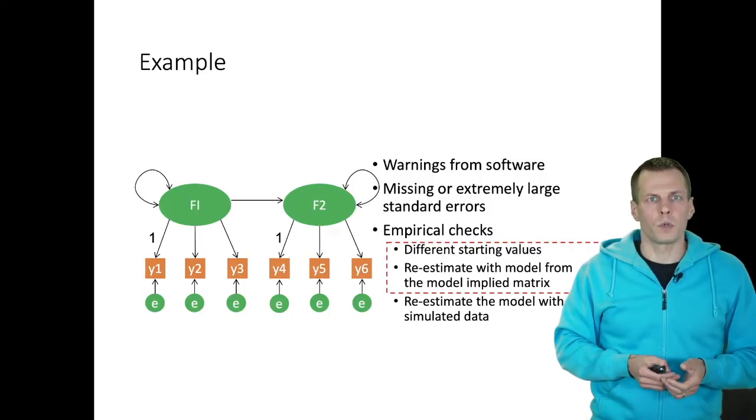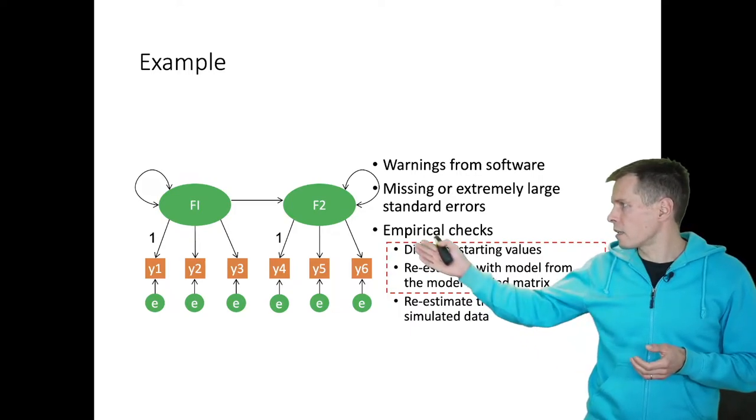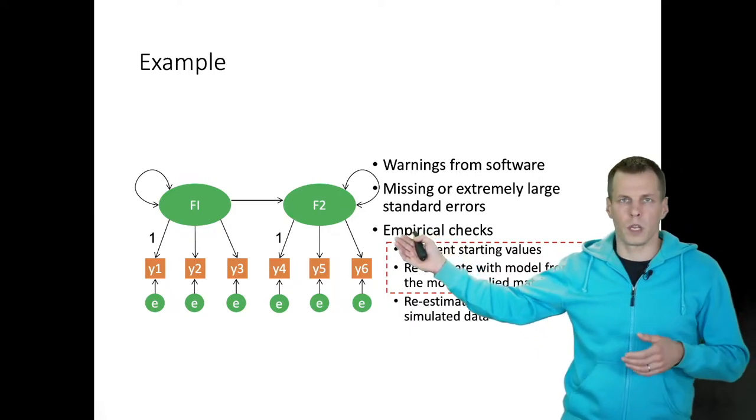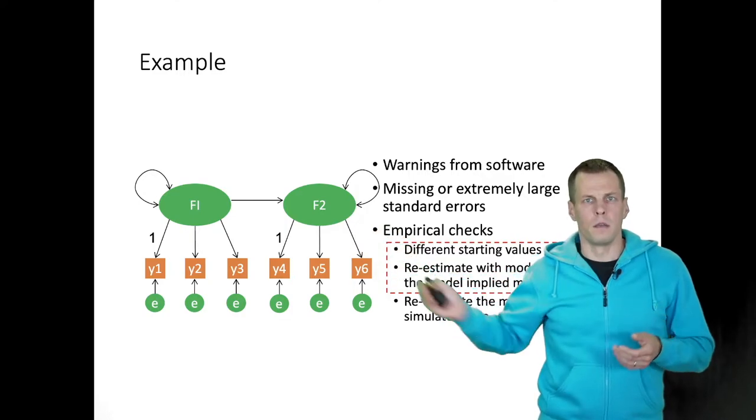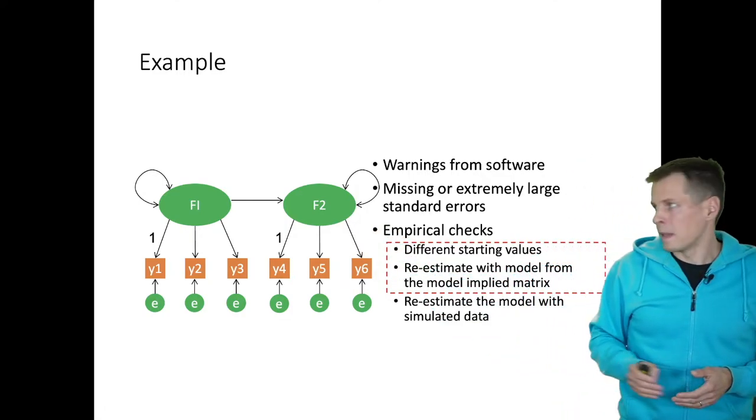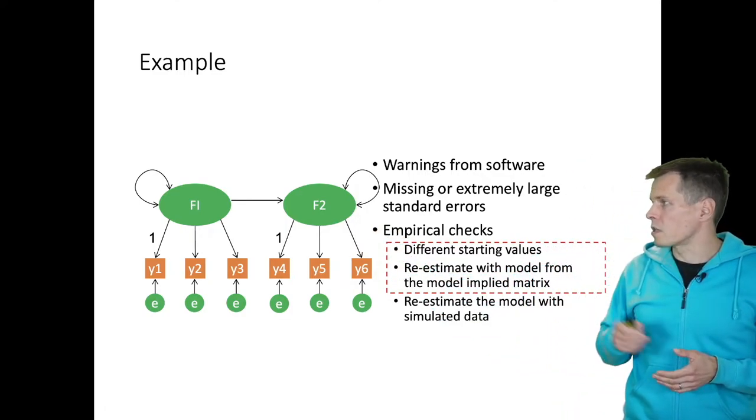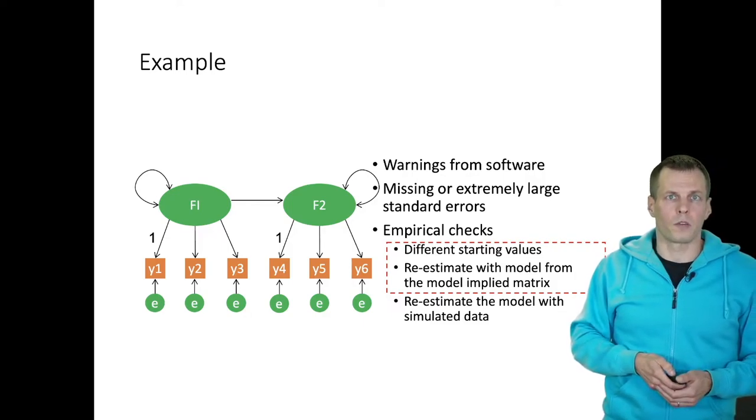Let's start first with an identified model. So this is a latent regression model, a structural regression model. We have F2 predicted by F1. Both are measured with three indicators and we'll try different starting values and re-estimating from the model implied covariance matrix.